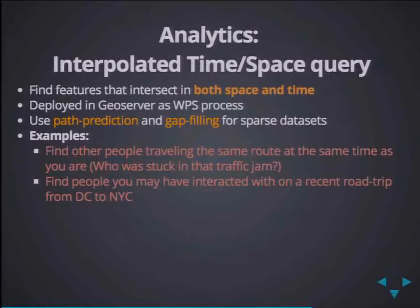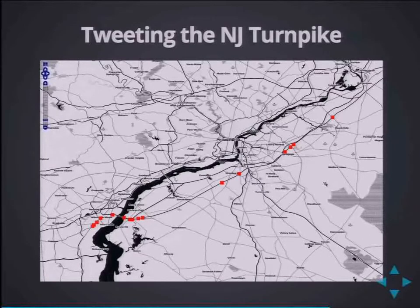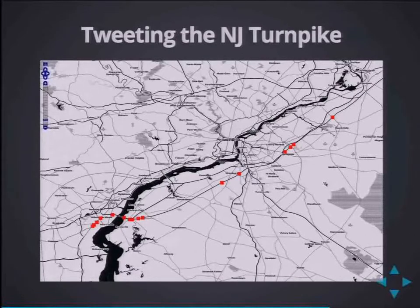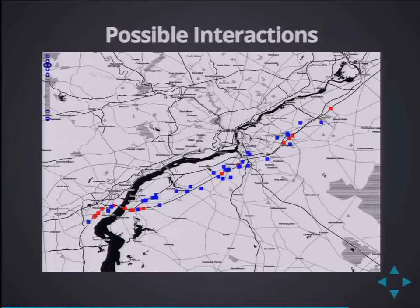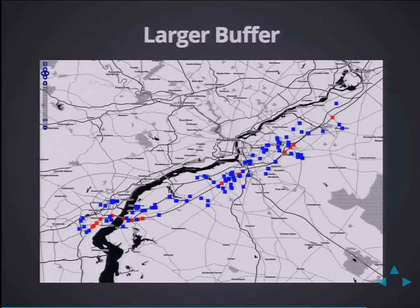Another interesting analytic we've developed as a WPS — implemented within server-side iterators — is an interpolated time-space query. Basically, you would like to see who you might have interacted with on a trip you've made. We like to think of it as tweeting the New Jersey Turnpike: a person is tweeting as they're traveling on the New Jersey Turnpike, and you'd like to know who might be on the megabus with them or who they might have stopped and interacted with. You do a complex series of queries that shift time through each gap and interpolate a track based on the road network or some other underlying layer. Possible interactions is the result of this analytic, with gap filling and snap-to-road tracks providing more information.